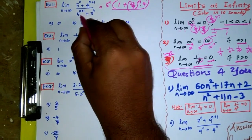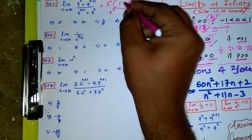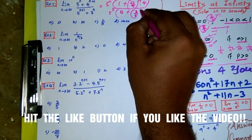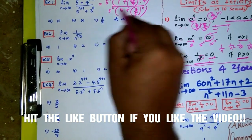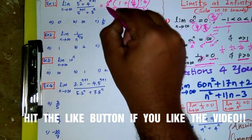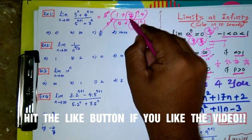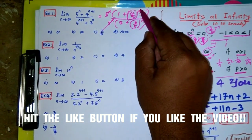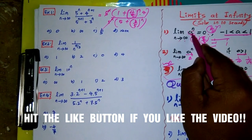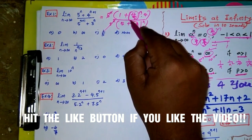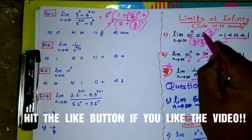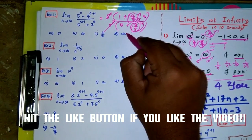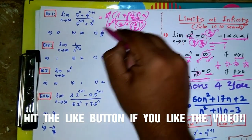In the denominator, the biggest number is also 5^n. Taking 5^n out, we get 5 + (3/5)^n. Now cancel 5^n from numerator and denominator. Applying the limit: (4/5)^n → 0 by Result 1 since 4/5 < 1, so the numerator becomes 1 + 0 = 1. Similarly (3/5)^n → 0, so the denominator becomes 5. The answer is 1/5. Hence option C is correct.